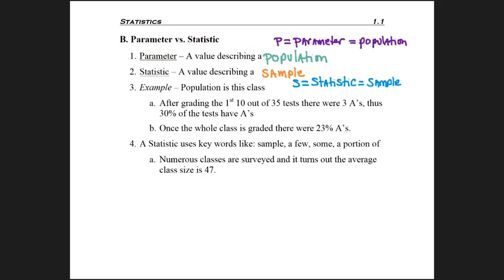Now let's look at two examples down below. The first example is after grading the first 10 out of 35 tests, there were 3 A's, and 3 out of 10 tests is 30%. So I report out that I have 30% of the tests have A's. Would this be a parameter or a statistic?